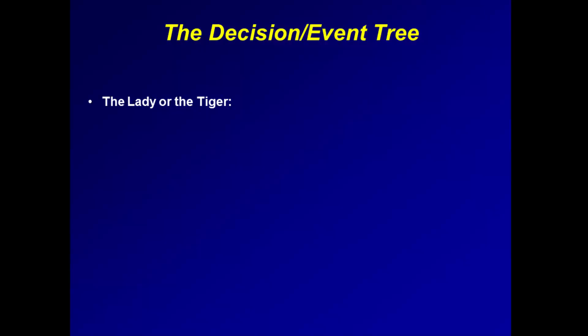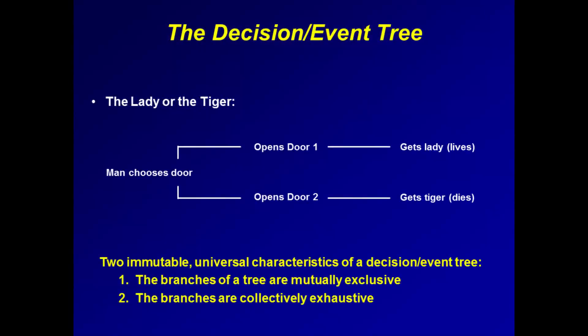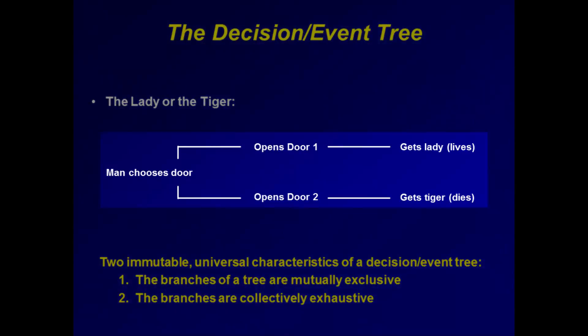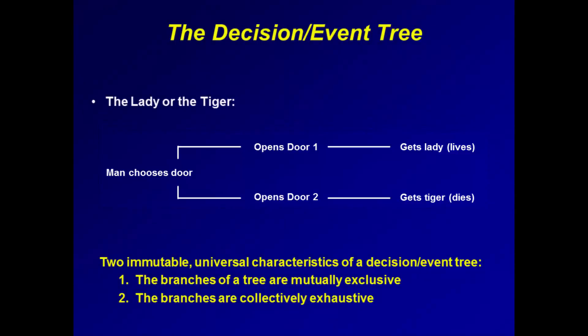The dilemma posed by Frank Stockton's famous story, The Lady or the Tiger, in which a man must choose between two doors — one leading to a beautiful lady, the other to a ravenous tiger — serves admirably to illustrate the decision event tree. The tree portrays two alternative scenarios or sequences of events: A, open door one and get the lady, or B, open door two and get the tiger.